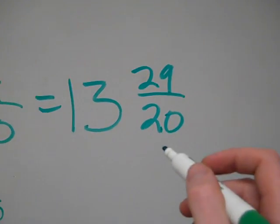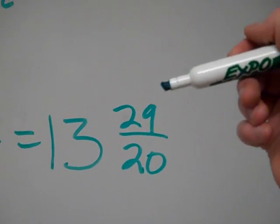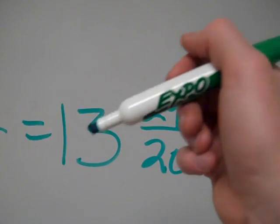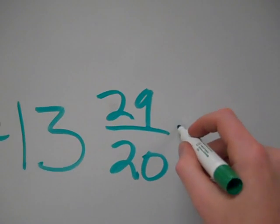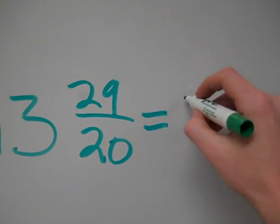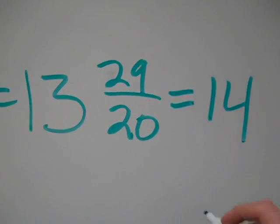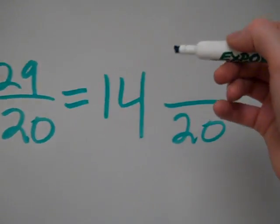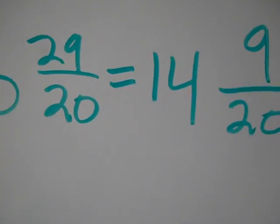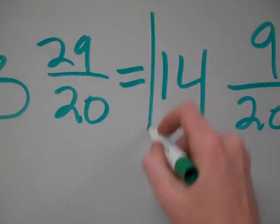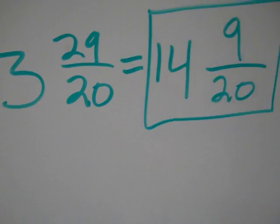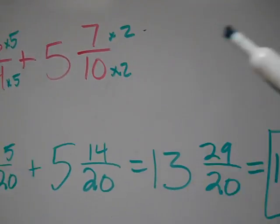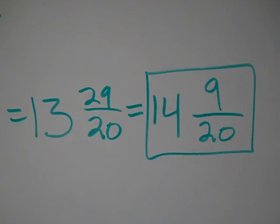Now 29/20 is an improper fraction because the top number is bigger than the bottom. 20 fits into 29 one time. So that means that this will increase by 1. It will go from a 13 to a 14. And then the leftover twentieths, after I put 20 into there once, is 9/20. And that's in simplest form. So 14 and 9/20 would be the answer to 8 and 3/4 plus 5 and 7/10.